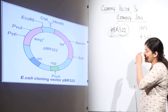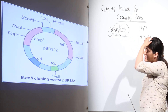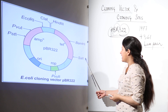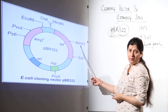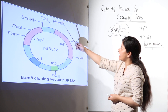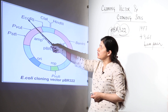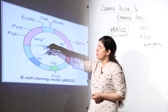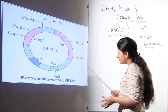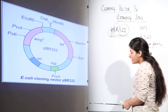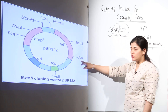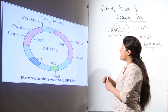PBR 322 has many restriction sites: PVU 2, SAL 1, BAM H1, HIND 3, CLA 1, ECO R1, PVU 1, and PCT 1. These are the different cloning sites, each being a restriction endonuclease recognition site, as shown in the diagram.